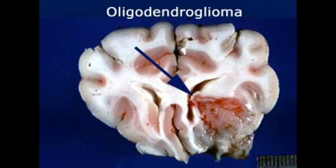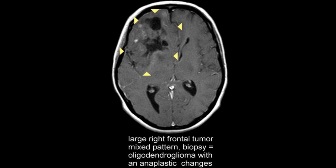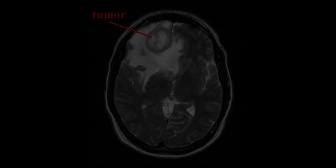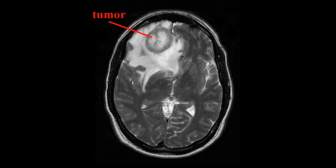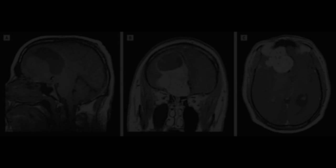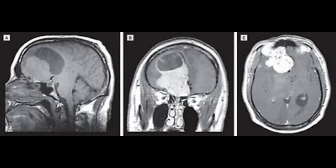Oligodendroglioma tumors develop in oligodendrocyte cells. These tumors are commonly located in the frontal and temporal lobes, but they can be formed anywhere within the cerebral hemisphere. These tumors can either be low or high grade. Oligodendroglioma tumors located in the frontal lobe can cause mood and personality changes and may also cause paralysis on one side of the body, called hemiparesis. Tumors located in the temporal lobe may cause problems with speech, memory, and coordination. Oligodendroglioma tumors account for 3.9% of all tumors.